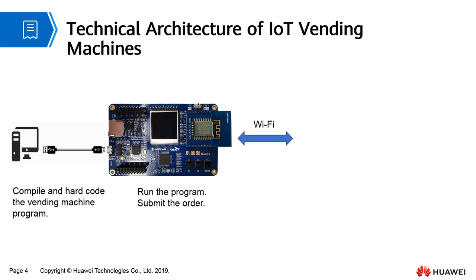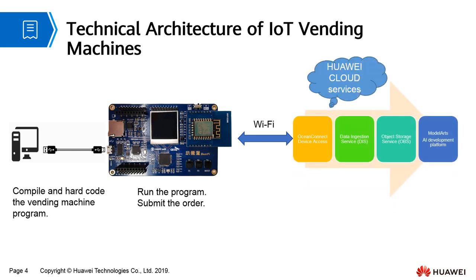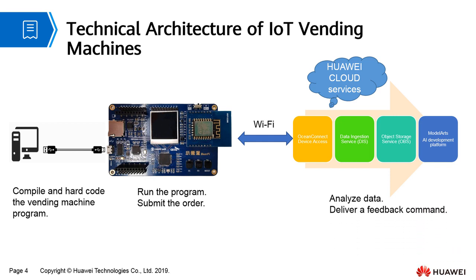Order data is transmitted to OceanConnect device access through Wi-Fi and forwarded to DICE, OBS, and ModelArts for analysis. Feedback commands will be delivered based on the analysis result. After receiving the feedback command, the developer board adjusts the product sequence displayed on the vending machine screen.